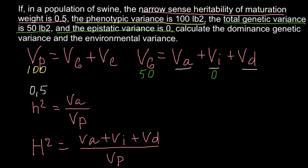We have to calculate the dominance genetic variance and the environmental variance. We can place Variance genetic = 50 into our first formula. It's super easy: if total phenotypic variance = 100 and genetic variance = 50, then Variance environmental also equals 50. So we've solved one of the questions.